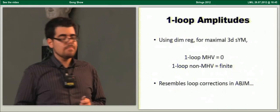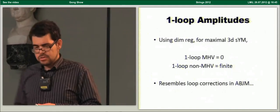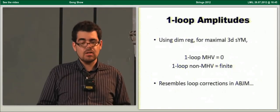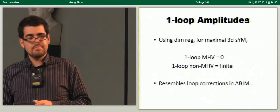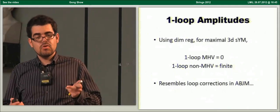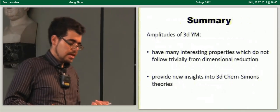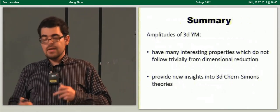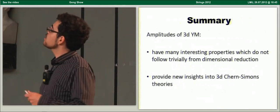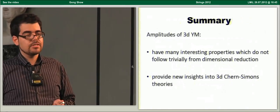The loop amplitudes also have an intriguing structure. Using dimensional regularization, the one-loop MHV amplitudes of maximal 3D Yang-Mills are zero, and the one-loop non-MHV amplitudes are finite. This is somehow compatible with one-loop corrections found in the ABJM theory, which is a 3D superconformal Chern-Simons theory. This suggests it might be possible to relate the two theories order by order in perturbation theory. The amplitudes of 3D Yang-Mills theory have many interesting properties which do not follow trivially from dimensional reduction of four-dimensional Yang-Mills theory, and they will provide deep new insights into 3D Chern-Simons theories.